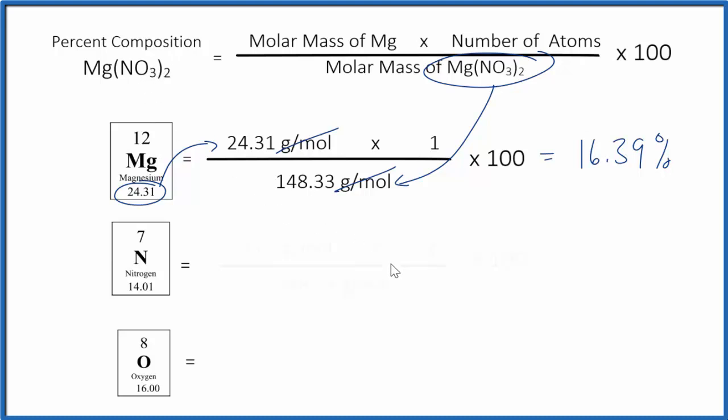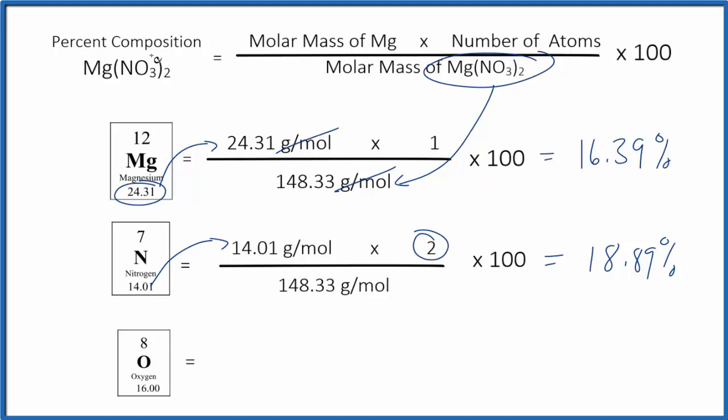For nitrogen, we do the same thing. The only difference here for nitrogen is that we have 2 times 1, because this 2 here goes to everything in parentheses. So 2 times 1, that gives us two nitrogen atoms. We have the molar mass for nitrogen, then we can divide by the molar mass for the compound. Multiply by 100, 18.89%, so that's the percent composition by mass of the nitrogen in magnesium nitrate.